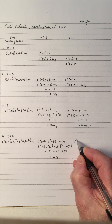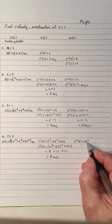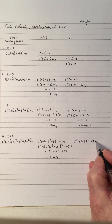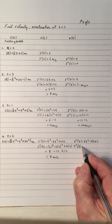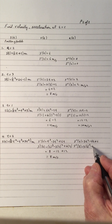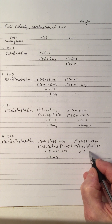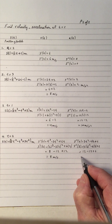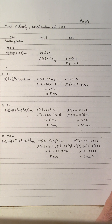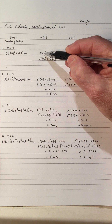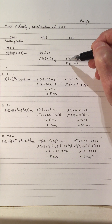The double prime gives the acceleration: derivative of the velocity gives 3t squared, negative 6t, and 6. We want the acceleration at 2 seconds, substituting t equals 2: 2 squared is 4, times 3 is 12, minus 12, plus 6 equals 6. That's 6 meters per second squared. So the velocity is the derivative of the position function, and the acceleration is the double derivative of the position function, or equivalently the derivative of the velocity.